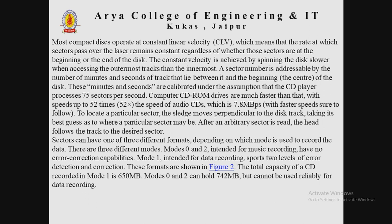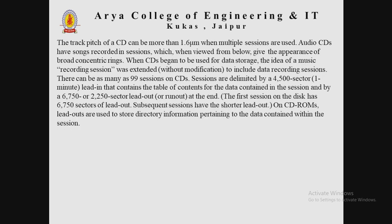CD-ROM drives are faster than that, with speeds up to 52 times the speed of audio CDs. The track pitch of a CD can be more than 1.6 micrometers while multiple sessions are used. Audio CDs have songs recorded in sessions, which when viewed from below give the appearance of broad concentric rings. As CDs began to be used for data storage, the idea of a music recording session was extended without modification to include data recording sessions.